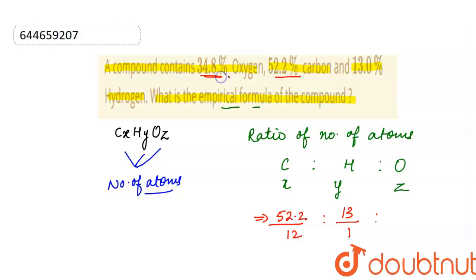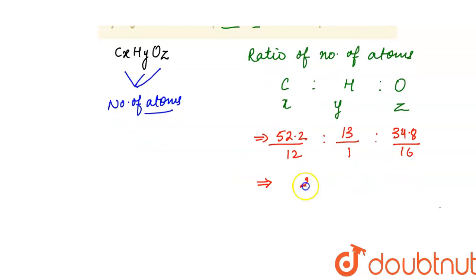Oxygen 34.8%, its molar mass is 16. So it will be 2, ratio 6, ratio 1.